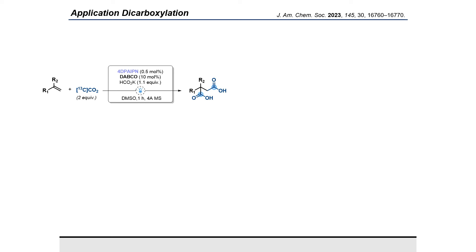Then, we were eager to also develop the biscarboxylation reaction using this radical anion. To do so, we slightly modified the catalytic system. Here, we are still using the same photocatalyst, but we removed the thiol and replaced it with DABCO as HAT catalyst. We also removed water from the solvent and added molecular sieves instead.